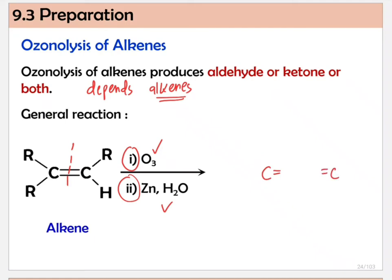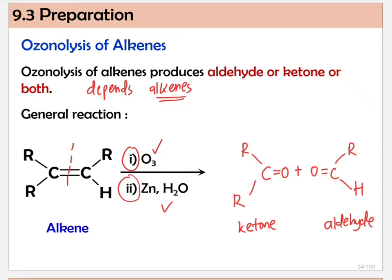Once the bond is cleaved into two, oxygen enters into both carbons from the C=C bond. Then we copy back the groups attached to the carbons. For example, if one carbon has R and R (alkyl groups) and the other has R and H, we get two products. The first gives a ketone, and the second gives an aldehyde because it has a hydrogen. So depending on the alkene used, you can get two ketones, two aldehydes, or a ketone and an aldehyde.